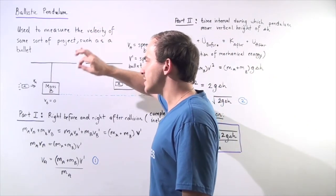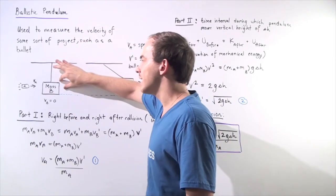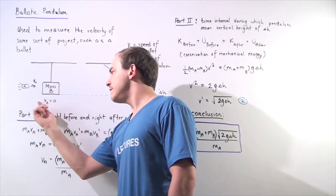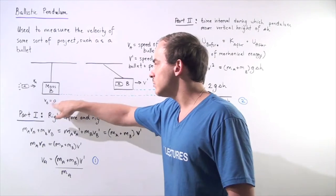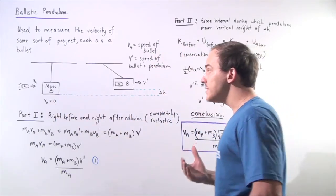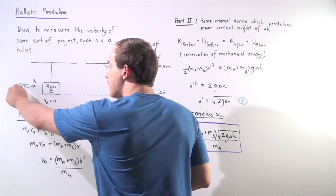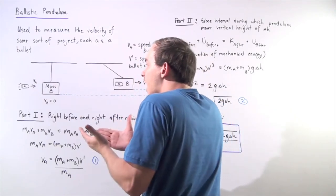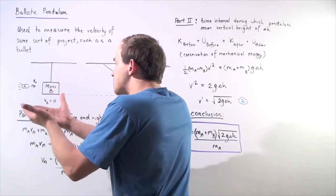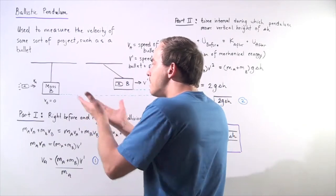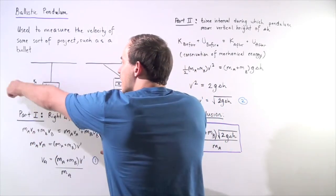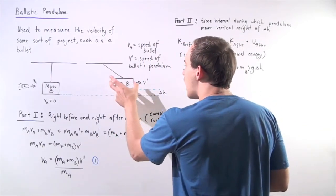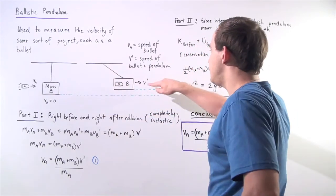We have a massless string that is attached to a block with mass mb, and our block is initially at rest, so velocity vb equals 0 meters per second. What happens is our mass ma, the bullet, collides with the block and gets stuck inside the block. After the collision takes place, our system is composed of the block and the bullet, and this combined system moves with velocity v prime.